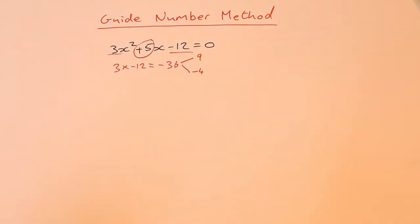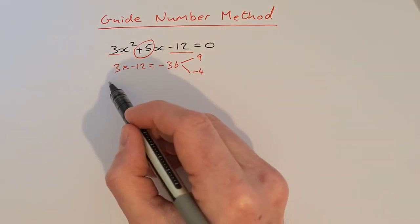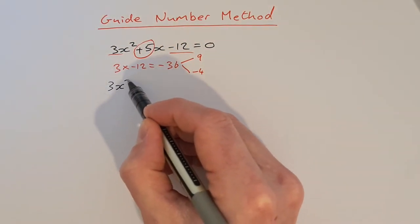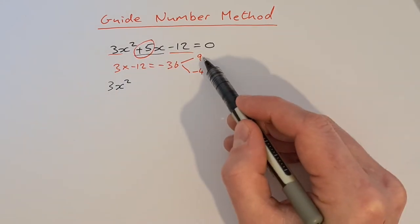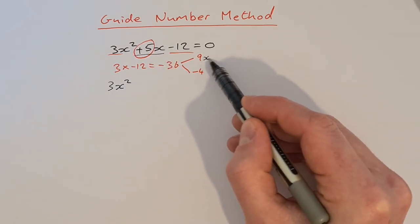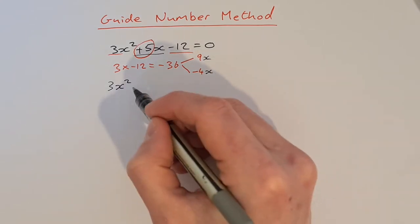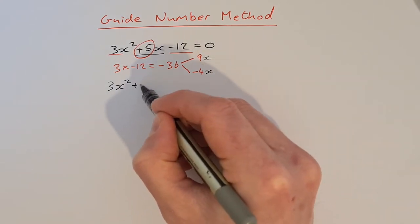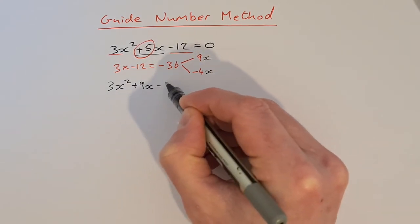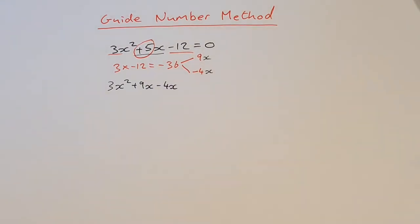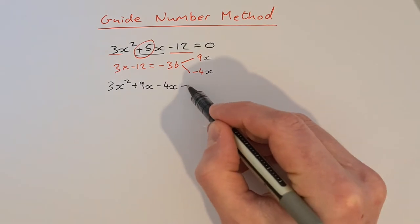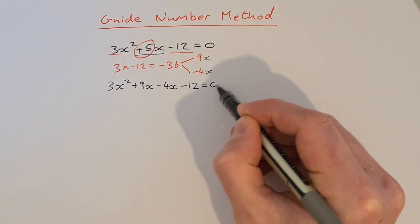So what I do with them now is I rewrite my quadratic equation as 3x squared. Now, instead of the 5x, I'm going to do plus 9x minus 4x. It actually doesn't matter what order you put them in — you can put them in the other order and it'll still work. Minus 12 is equal to zero.